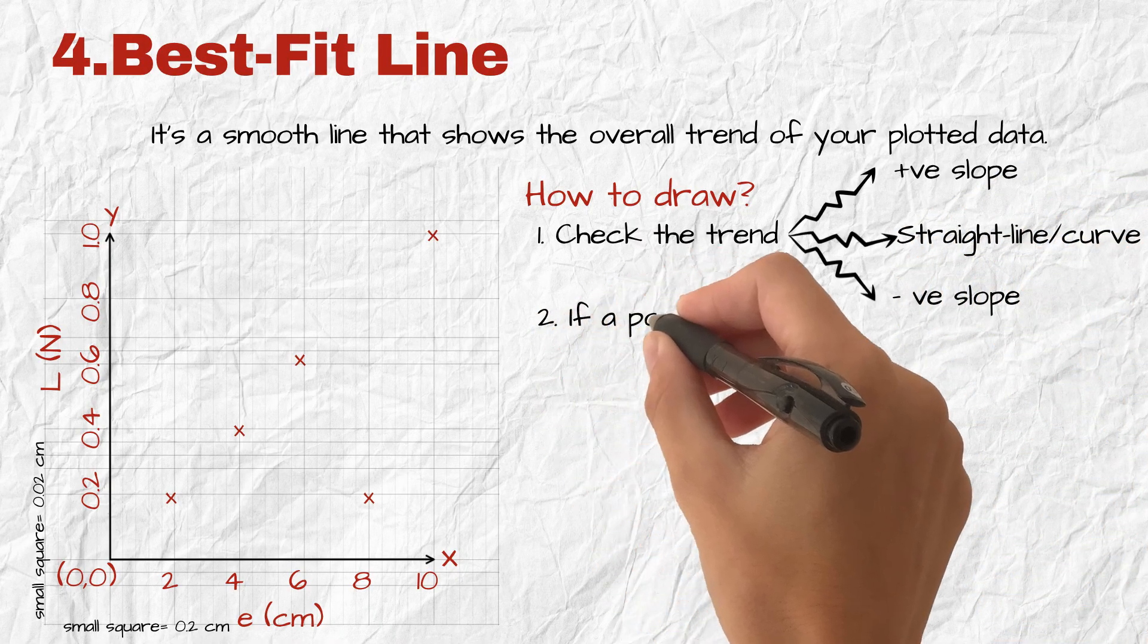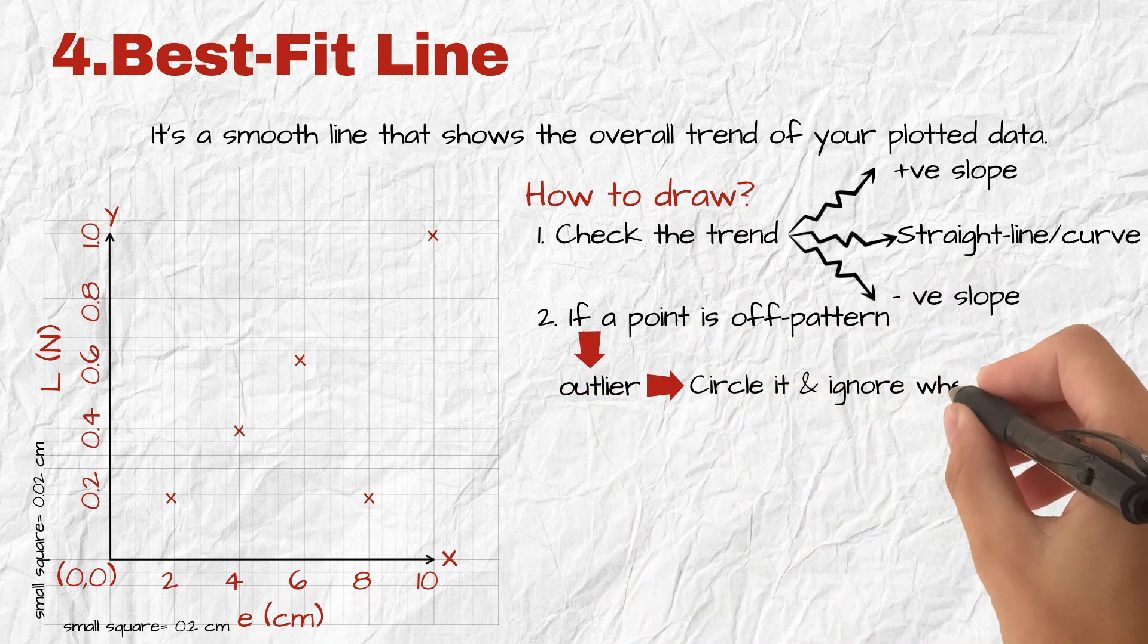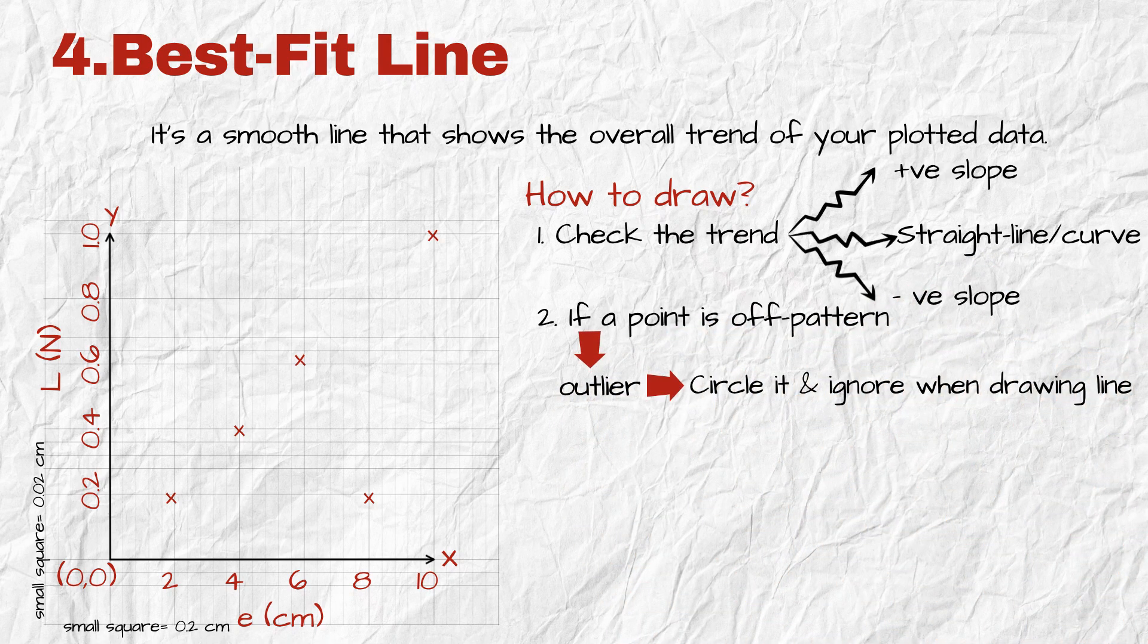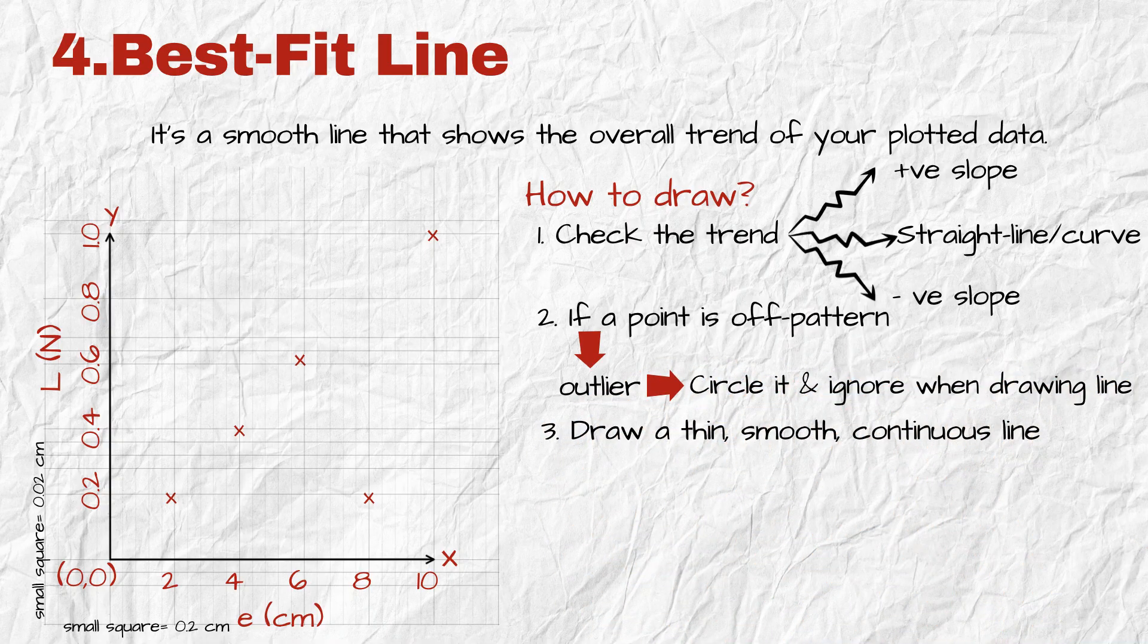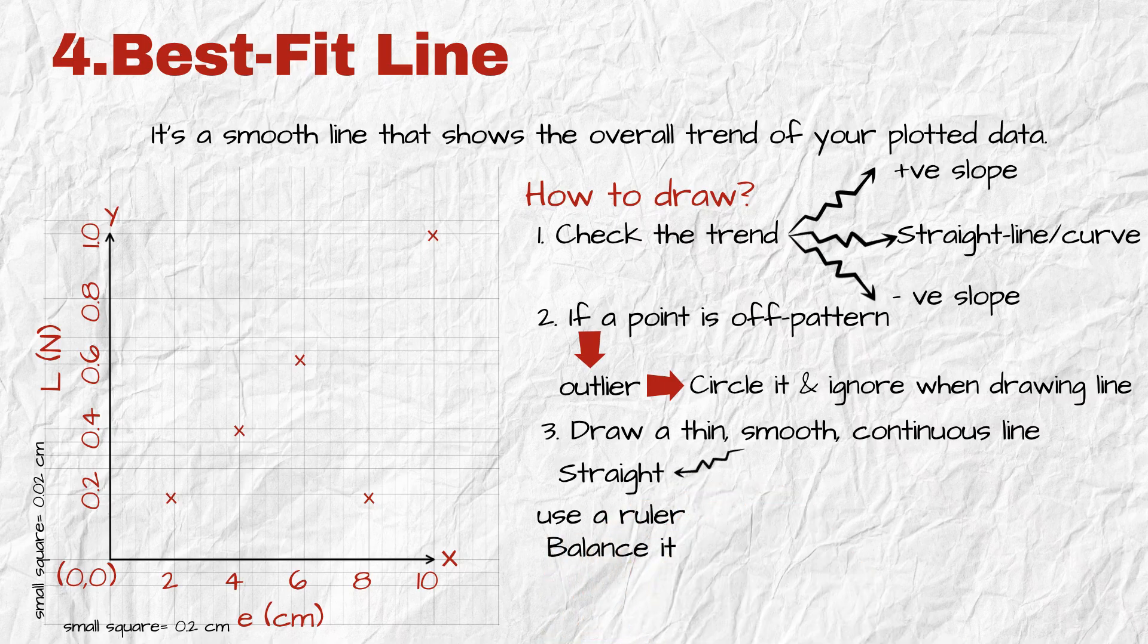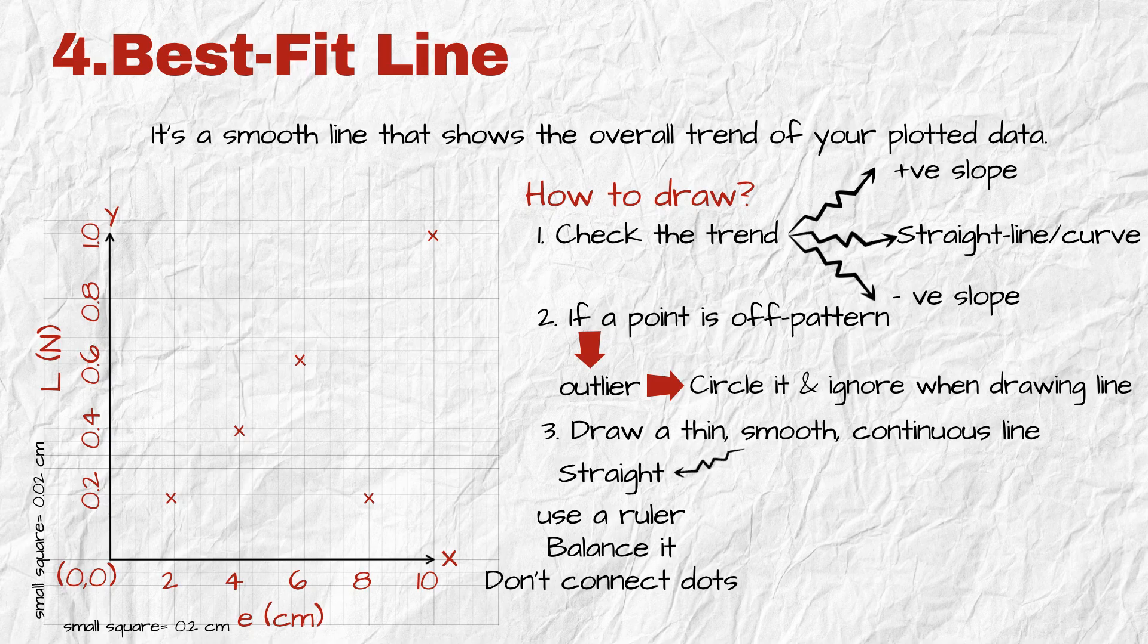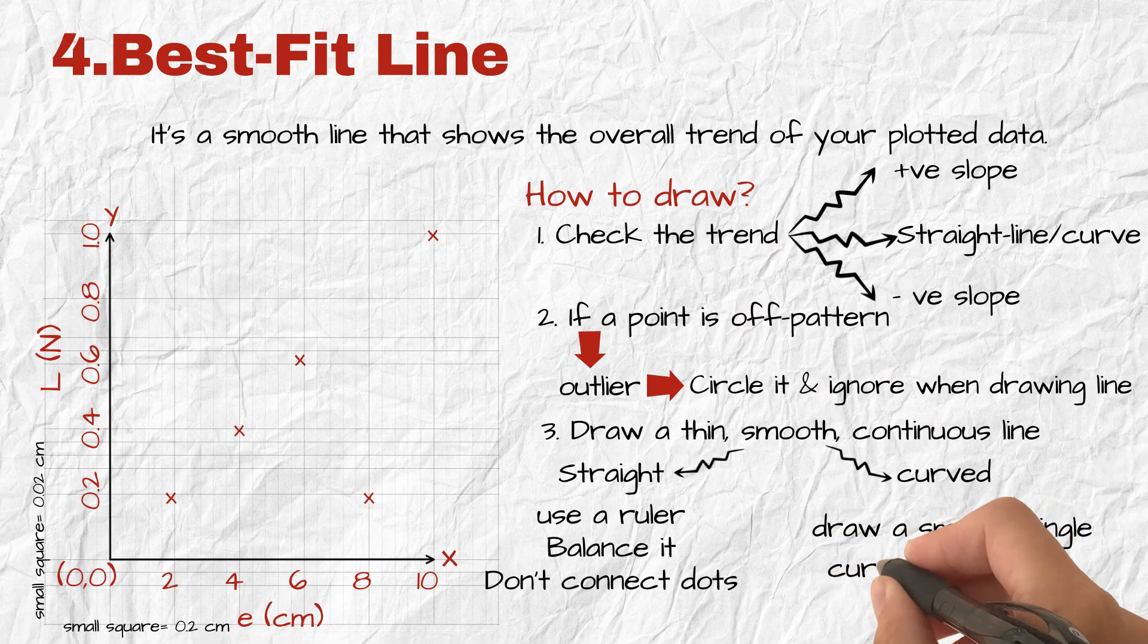Second, if a point is clearly off pattern, that's an outlier. Just circle it once and ignore it when drawing your line. Third, draw a thin, smooth, continuous line. If it's a straight pattern, use a ruler. Balance it. Some points above, some below. Don't just connect two dots. Your line might pass through all, some, or none of the points. That's okay. If it's curved, draw a smooth single curve that follows the general shape of the points.